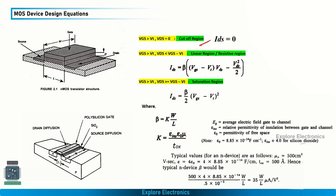In the cutoff region there is no current flow, so IDS equals zero. In the linear region, both VGS and VDS affect the current flow. In the expression, VGS minus VT is the channel voltage, also affected by VDS. The resulting expression is: IDS = beta × [(VGS − VT) × VDS − VDS² / 2]. Let us derive how we arrive at this expression for the non-saturation region.